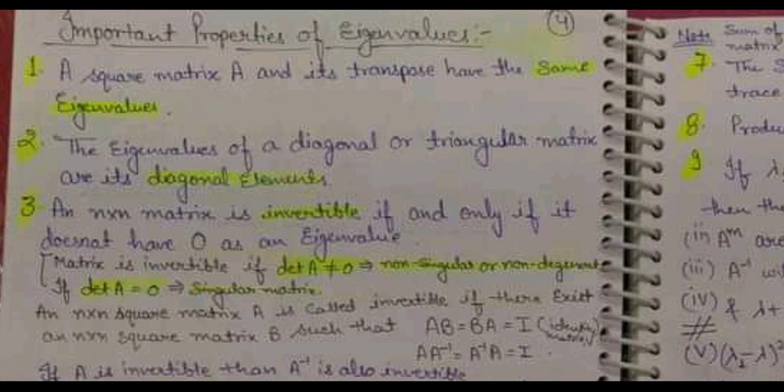The first property is that for any square matrix, if you are finding its transpose matrix, the eigenvalues for both the original and the transpose matrix will be the same. Next, if we talk about the eigenvalues of a diagonal and a triangular matrix, for both types of matrices the eigenvalues will be equal to their principal diagonal elements.